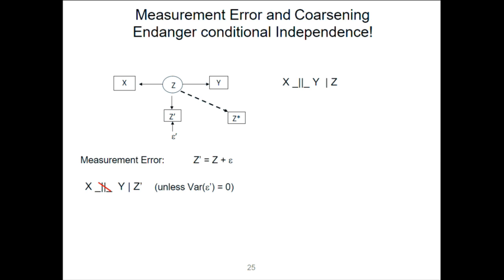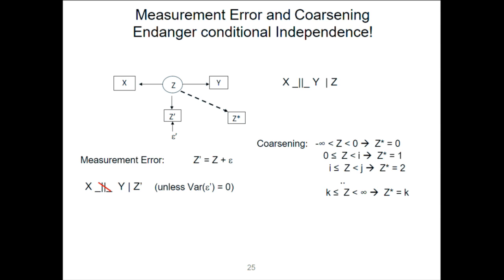That's not the only problem. There's another one called coarsening. Z might be some continuous quantity, but instead of measuring the continuous quantity, you measure something discrete like low, medium, and high — or zero, one, or whatever. You assign Z-star zero when Z is between negative infinity and zero, assign it one when Z is between zero and some cutoff I, assign Z-prime two when between I and J, and so on, giving you K+1 different categories — a discretized, coarsened measure Z-star.